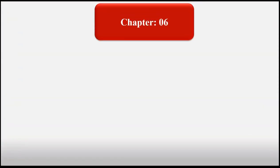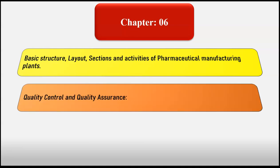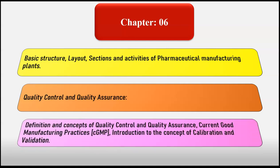The sixth chapter covers the basic structure, layout, sections, and activities of pharmaceutical manufacturing plants. The next point in this chapter is quality control and quality assurance, where we will study the definition and concepts of QC and QA, current good manufacturing practices (cGMP), and an introduction to the concept of calibration and validation.